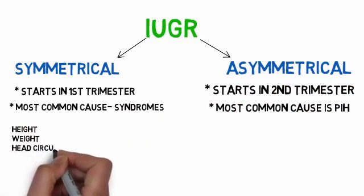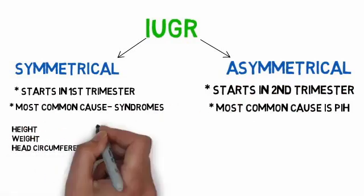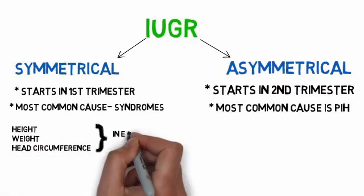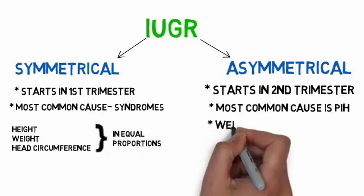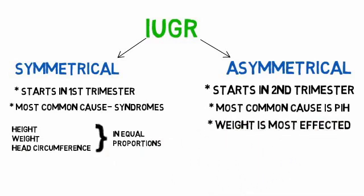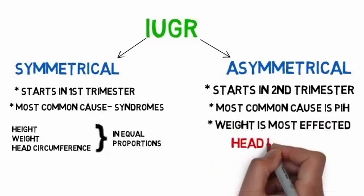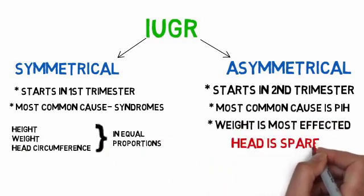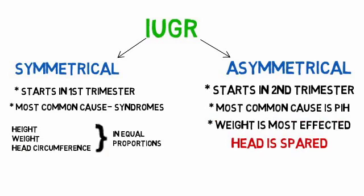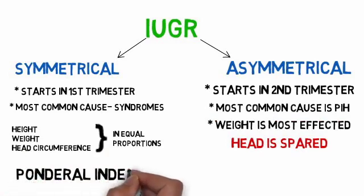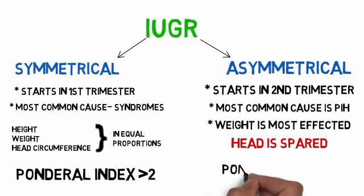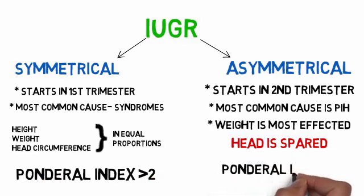In symmetrical IUGR, height, weight, and head circumference are affected in equal proportions. Whereas in asymmetrical IUGR, weight is mostly affected and the head is spared. Therefore, in symmetrical IUGR the ponderal index will be greater than 2, and in asymmetrical IUGR the ponderal index will be less than 2.